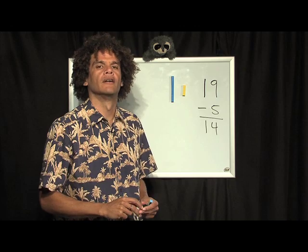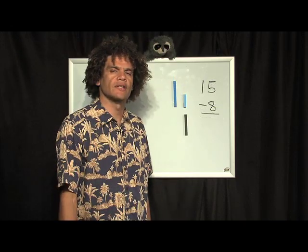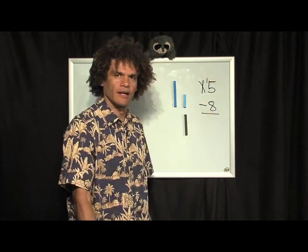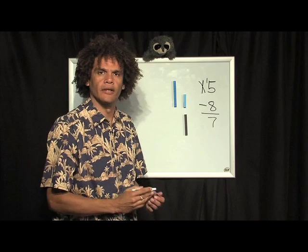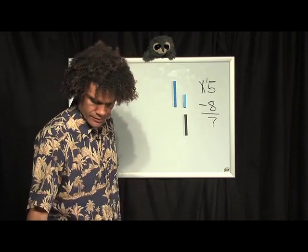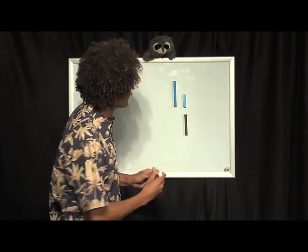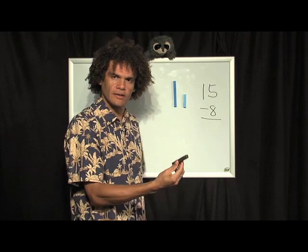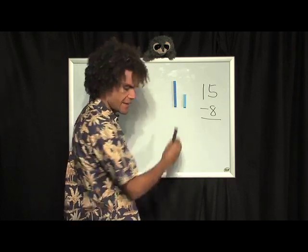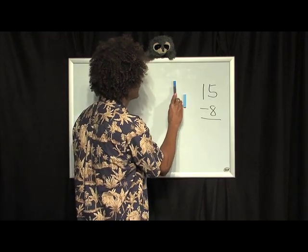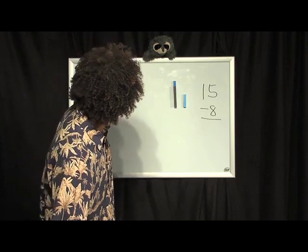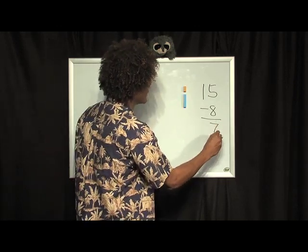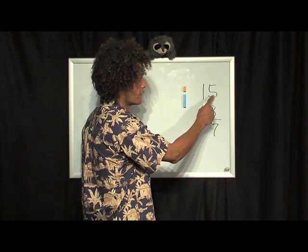Fourteen. Now it gets better — here's a slightly more complex problem: fifteen take away eight. I've seen students count backwards on their fingers. Let's look at it differently. If I have fifteen and want to take away eight, can I take this eight out of this five? Well, I can't. So I take it out of this ten. We know from our 'want to be a ten' game — what does eight need to be a ten? It needs two. So you can see a two would fit right there. Take away eight from the ten and I have two left, then add two to five to get seven.